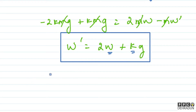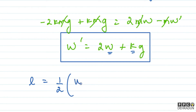Now, both bodies are approaching each other. The initial separation between them was L. The initial velocity was zero for both. So we can write: L equals half times relative acceleration times t squared. The formula I am using is s = ut + ½at². Since both were initially at rest, the initial relative velocity is zero. Since both are moving towards each other, I will add their accelerations.